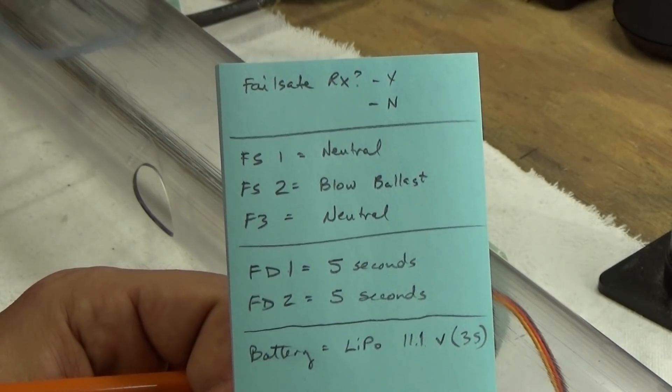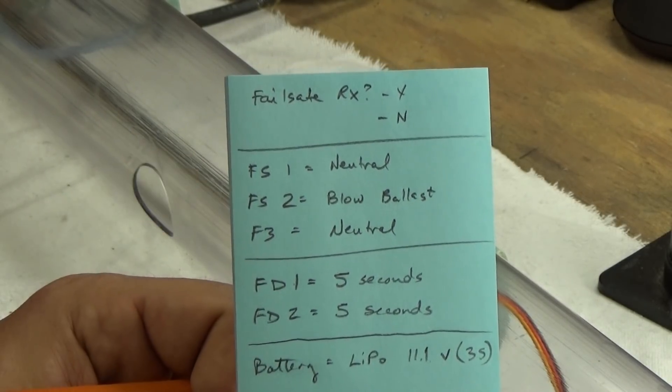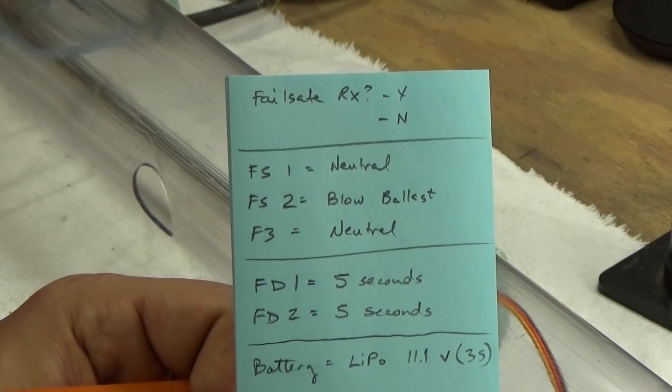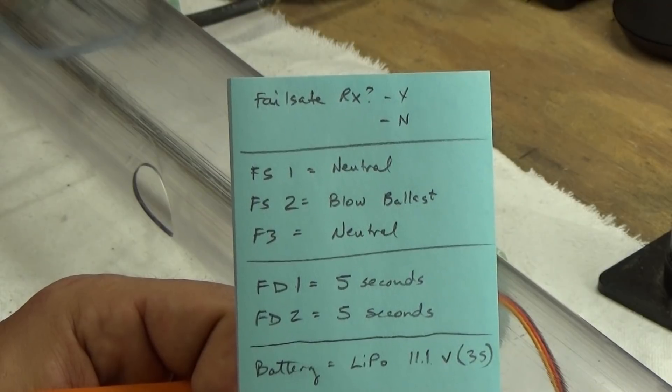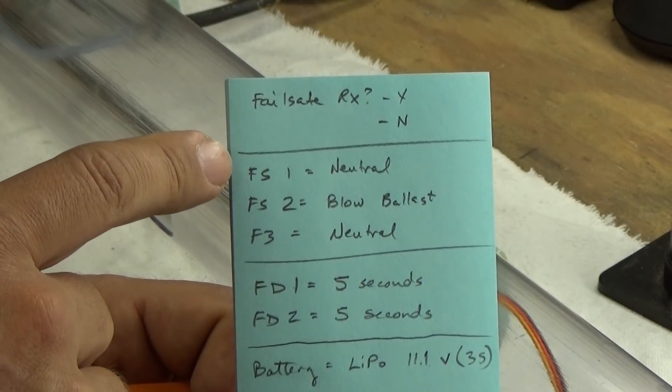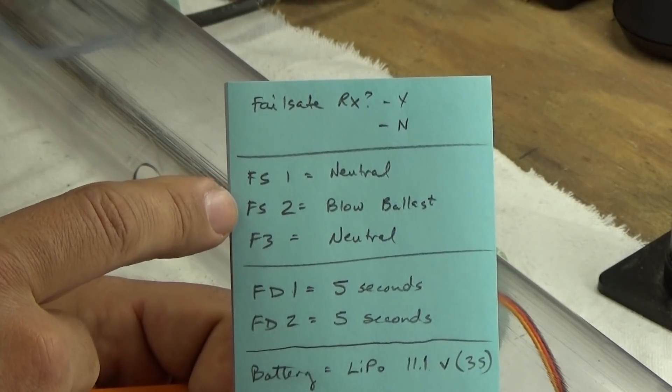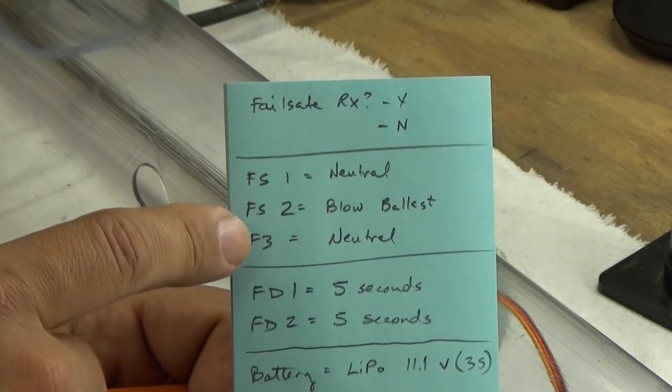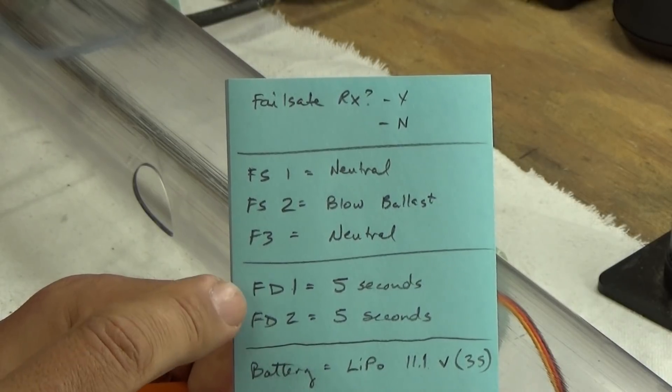The second one you're going to need to talk about is what happens at the three different stages of the failsafe protocols. The first one is what happens during the first failsafe stage. The second one is what happens when it's actually trying to correct a failsafe situation. And the third one is what happens after it's attempted to correct the failsafe situation. In practical application, it detects a loss of signal, it's going to wait for whatever period of time you determine. It is then going to blow the ballast for however long we set, and once it's done it's going to go back to neutral again.